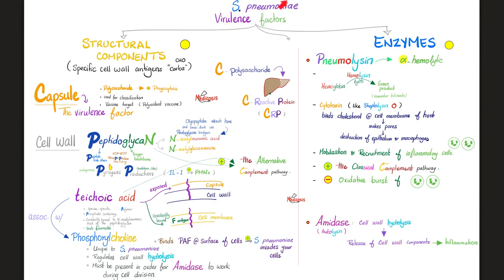The same pneumolysin also inhibits the oxidative burst of your neutrophils. So it recruits neutrophils causing inflammation, but those neutrophils are not so effective because their oxidative burst is inhibited — strep pneumo is very sneaky. Amidase, the autolysin, causes lysis via hydrolysis, releasing cell wall components of the bacteria into your bloodstream, which trigger inflammation.